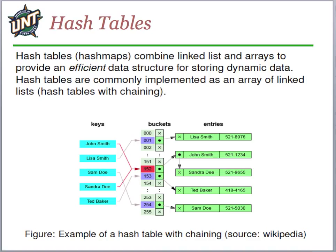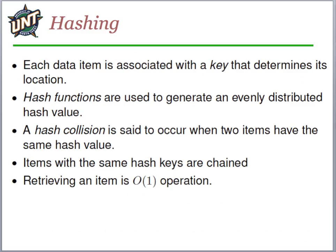We call that an index — you can think of it like a table of contents. We go to this small data structure to look up the file name, then it tells us where on disk it's located without having to scan the whole disk. We use that with other kinds of data too; some databases use these techniques as well. Basically, each data item is associated with a key — like the file name — and then we use a hash function to generate a hash value, which is where it's stored. Sometimes two items end up with the same hash value — that's called a hash collision.